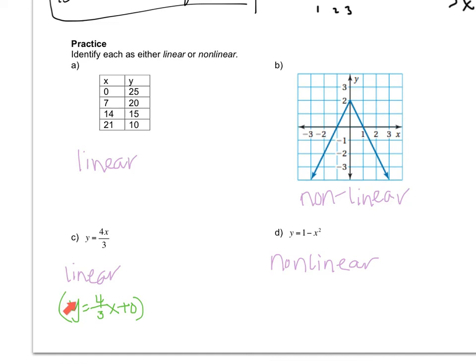Down in letter C, I just rewrote it using slope and intercept. And remember, if you can write it in slope-intercept form, it's linear. So this would be 4 thirds x plus zero. And this is nonlinear because it has an exponent. If you have any questions, write them down and ask me when you come to class.